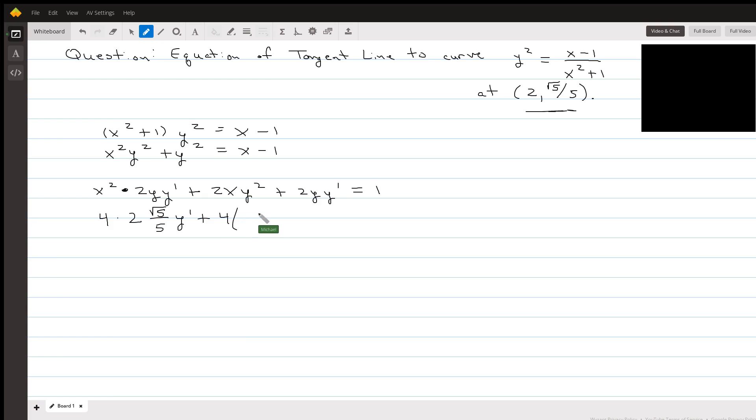So 4 times, if you square the y value, you're going to get 5 over 25. Plus 2 times the y value, so 2 root 5 over 5, y prime equals 1.